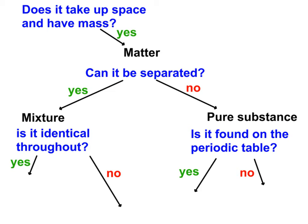Does it take up space and have mass? Yes — it's matter. Can it be separated? Yes, it can be — it's a mixture. Is it identical throughout? Yes, it is. Then what do you think this word is? Starting at the top again: does it take up space and have mass? Yes, it does — it's matter. Can it be separated? No — it's a pure substance.